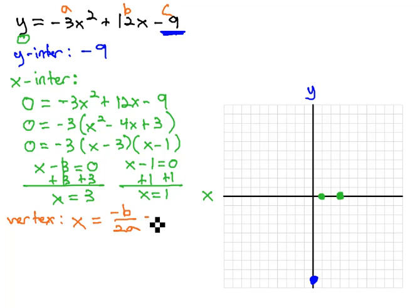With a, b, and c clearly marked on our original equation, the opposite of b is negative 12 over 2 times a, or negative 3. That gives us negative 12 over negative 6. The x-coordinate is equal to 2.